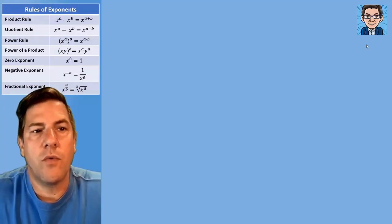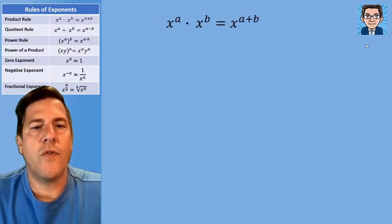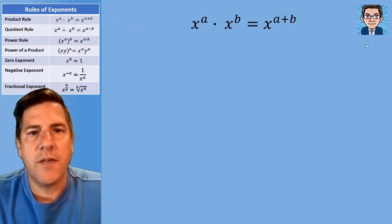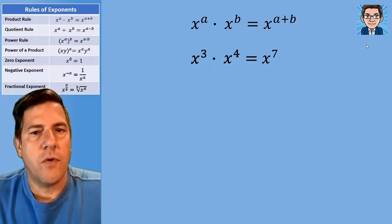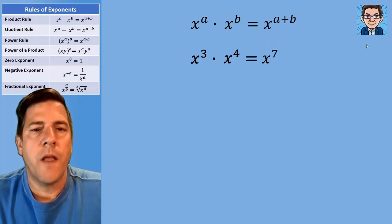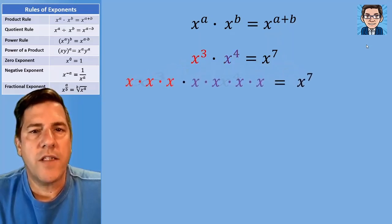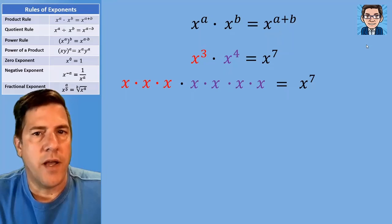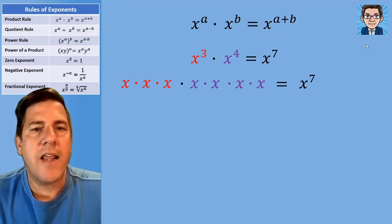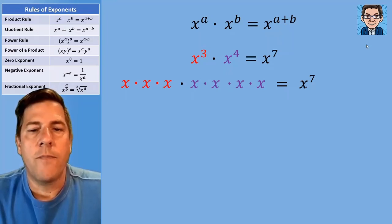Let's take a look at rules of exponents. Our first rule is when we multiply two variables that have exponents, we're going to add the exponents. So something like x to the third times x to the fourth equals x to the seventh. If we break it down, x to the third is multiplying x three times and x to the fourth is multiplying x four times, so we're adding the number of times we're multiplying together — seven times total.